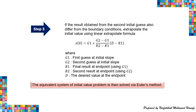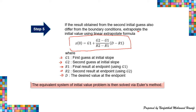For the last step: if the result obtained from the second initial guess also differs from the boundary conditions, we need to extrapolate the initial value using the linear extrapolation formula. The formula involves G1 (first guess at initial slope), G2 (second guess at initial slope), R1 (final result at end point using G1), R2 (second result at end point using G2), and D (desired value at end point). After obtaining the new initial guess, we solve again using Euler's method.